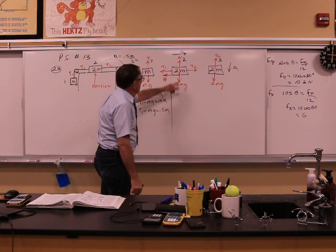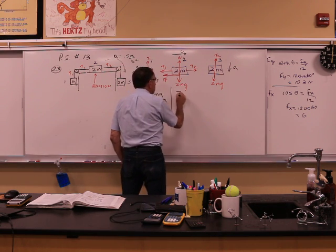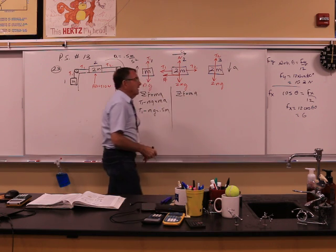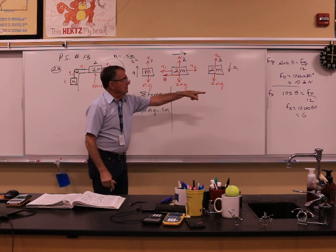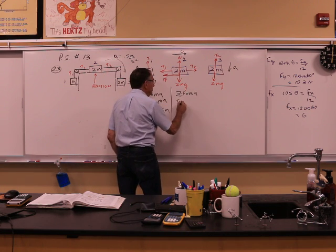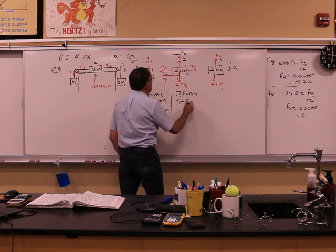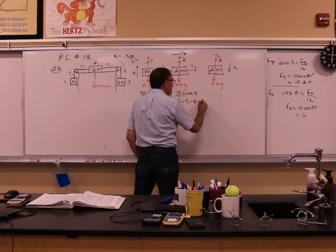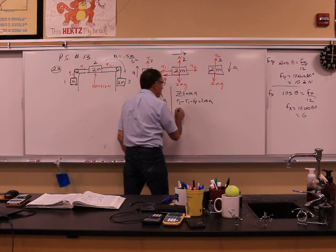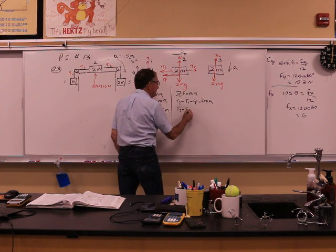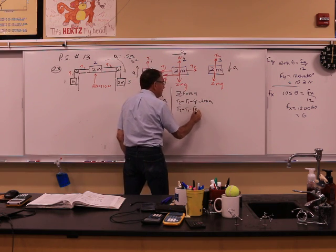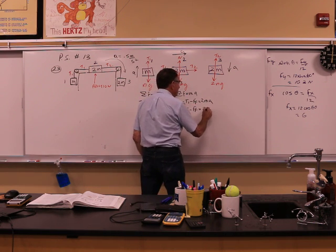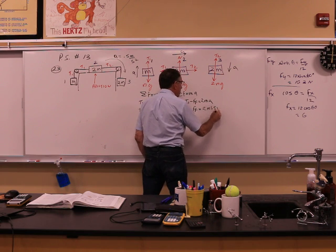Next equation. This free body. Sum the forces equal to M.A. We go in this direction. That's T2 minus T1 minus force of friction. The mass is 2M. 2M.A. T2 minus T1 force of friction. 2 times M times 0.5.